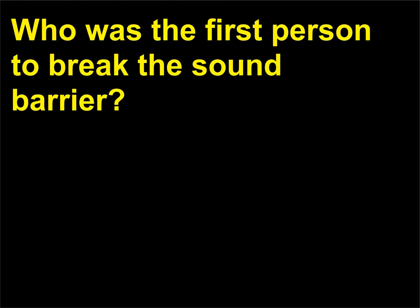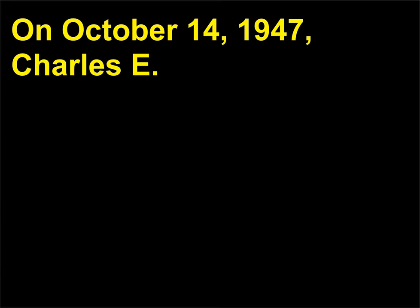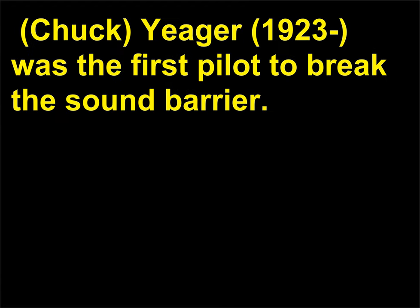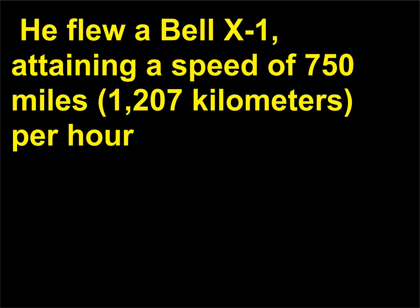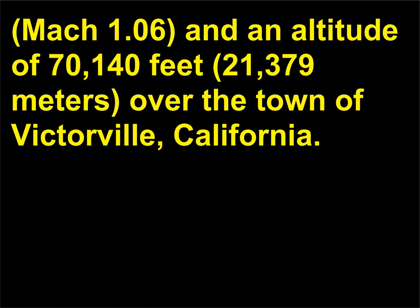Who was the first person to break the sound barrier? On October 14, 1947, Charles E. 'Chuck' Yeager (1923) was the first pilot to break the sound barrier. He flew a Bell X-1, attaining a speed of 750 miles (1,207 kilometers) per hour, Mach 1.06, and an altitude of 70,140 feet (21,379 meters) over the town of Victorville, California.